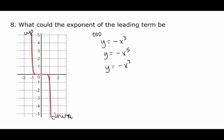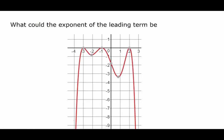Because of the shape, we know that the exponent on the leading term is odd and the coefficient is negative. Now we start down and end down.